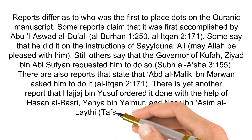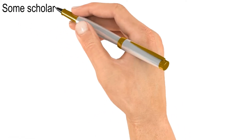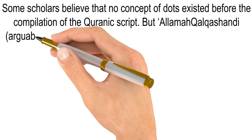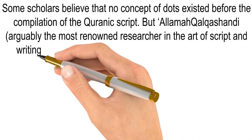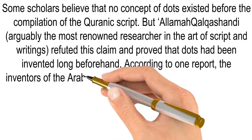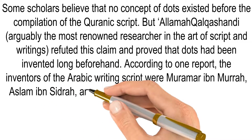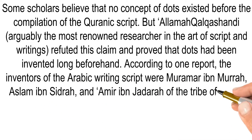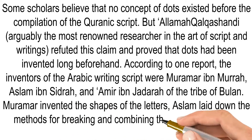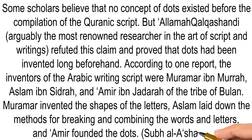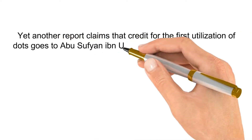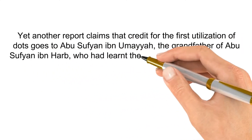There is yet another report that Hajjaj ibn Yusuf ordered it done with the help of Hasan al-Basri, Yahya ibn Ya'mur and Nasr ibn al-Asim al-Laythi. Some scholars believe that no concept of dots existed before the compilation of the Quranic script, but Allama Qalashkandi, arguably the most renowned researcher in the art of script and writings, refuted this claim and proved that dots had been invented long beforehand. According to one report, the inventors of Arabic writing script were Murammar ibn Murrah, Aslam ibn Sidrah and Amir ibn Jadrah of the tribe of Bulan. Murammar invented the shapes of the letters, Aslam laid down the methods for breaking and combining words and letters, and Amir founded the dots. Yet another report claims that credit for the first utilisation of dots goes to Sufyan ibn Umayyah, the grandfather of Abu Sufyan ibn Harm, who had learnt them from the people of Anwar.